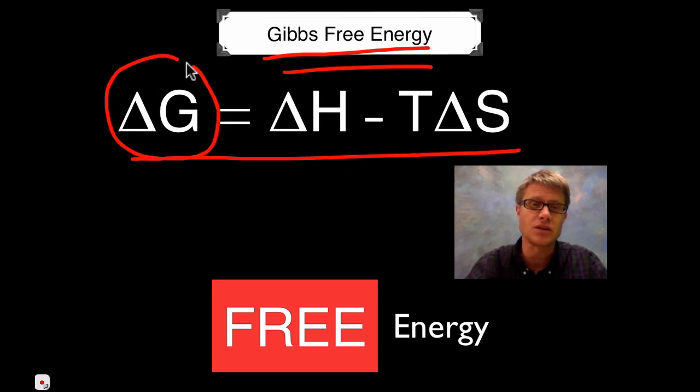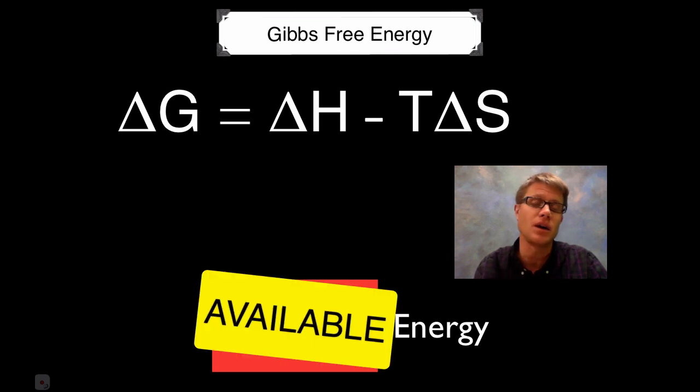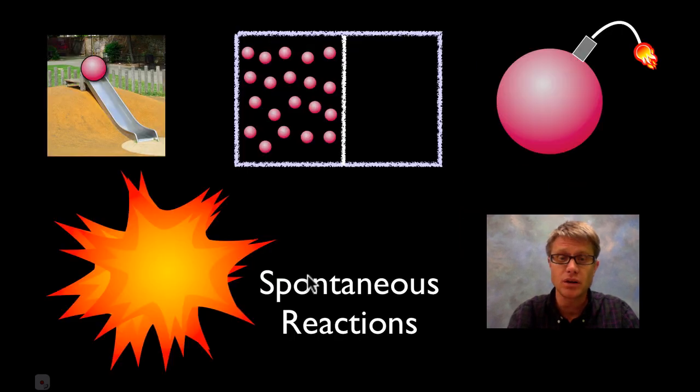The important thing to understand is what happens with a change in Gibbs free energy or change in free energy. We've got three terms: H stands for the total energy, T stands for temperature, and S stands for entropy. A better way to think of free energy is available energy.